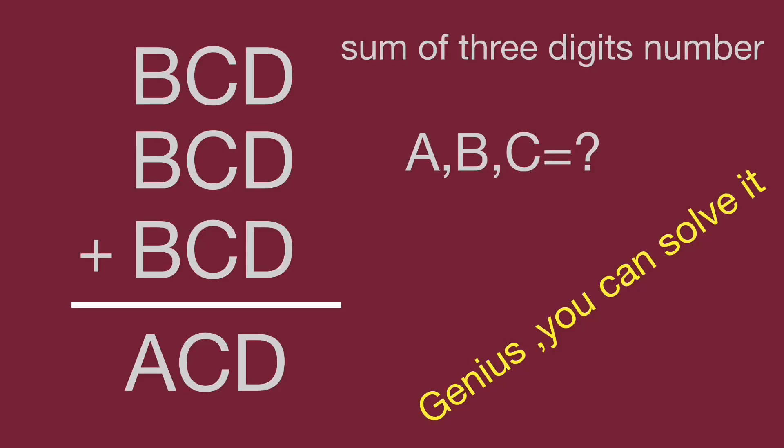Hello, you are watching Bala Hippo math genius readers. We have fun math questions from China junior school teachers. The sum of three-digit number BCD plus BCD plus BCD equals a new three-digit number ACD. Find the numbers for A, B, C, and D. Would you please find the interesting numbers? Pause the video and try it. When you are ready, keep watching to know the result.